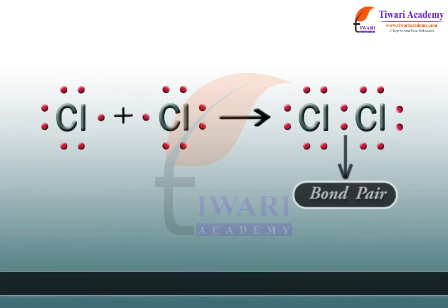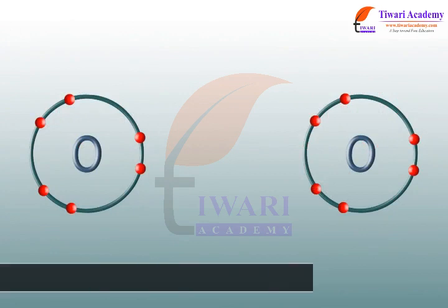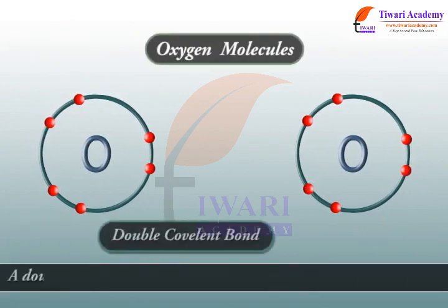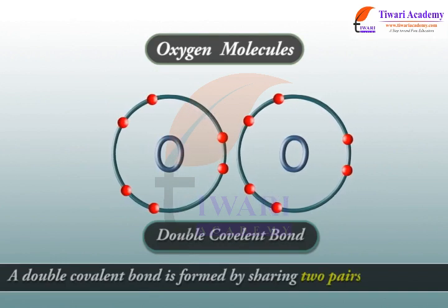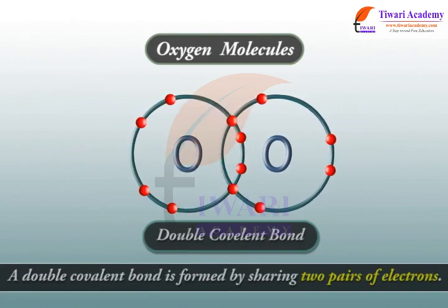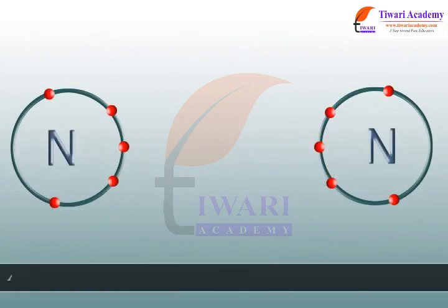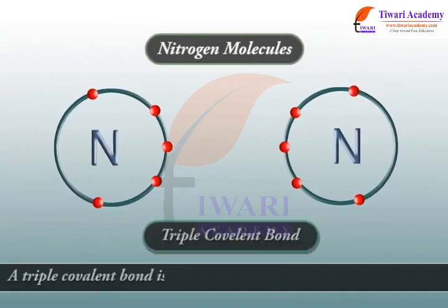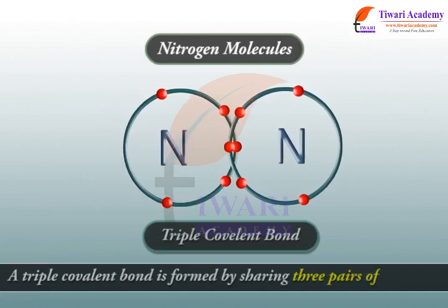A single covalent bond is formed by sharing a pair of electrons. A double covalent bond is formed by sharing two pairs of electrons. A triple covalent bond is formed by sharing three pairs of electrons.